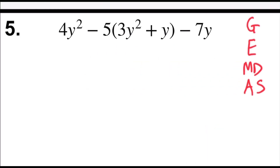Problem number five says 4y squared minus 5 times 3y squared plus y minus 7y. I'm going to look for my grouping symbols. I do have parentheses; however, you can't work anything inside them — 3y squared plus y, they're not like terms.